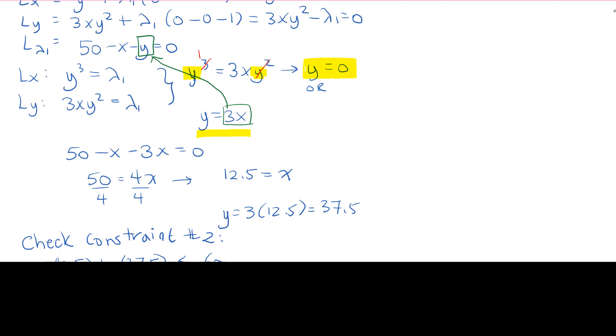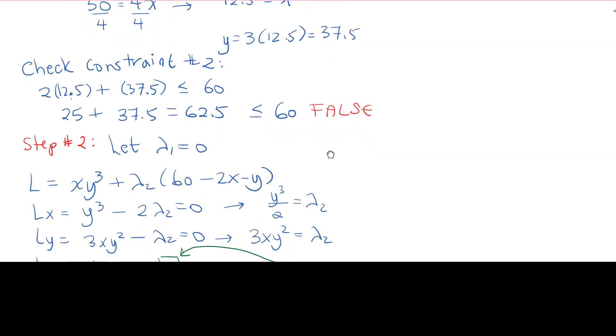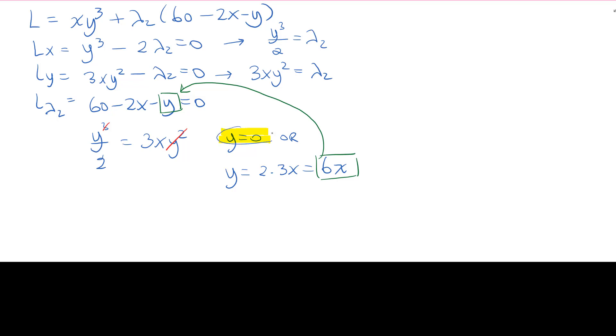Moving on to what we're just working on right now, step number 2. Either, again, y is 0, or y is 6x. Again, y is 0 is a possibility because we have y's on both sides. So 0 could be equal to 0, regardless of what else it's being multiplied by.